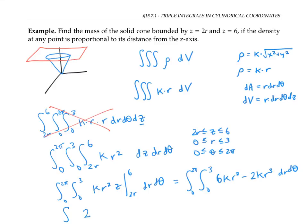Next, I get 2kr³ minus kr⁴/2, which simplifies to 27k/2.